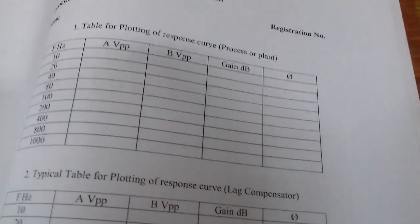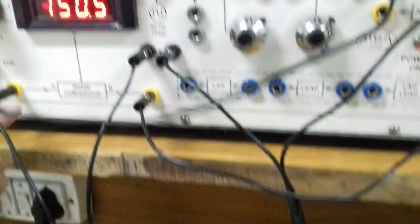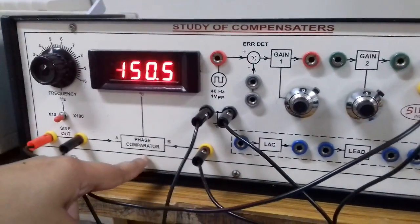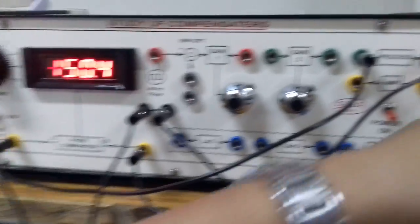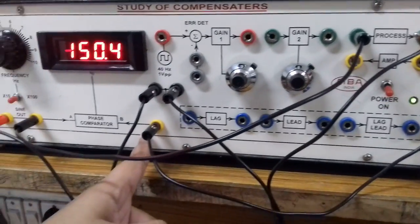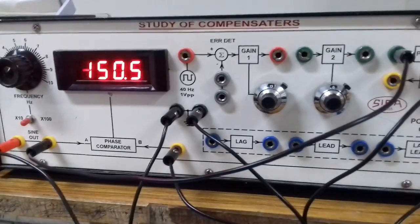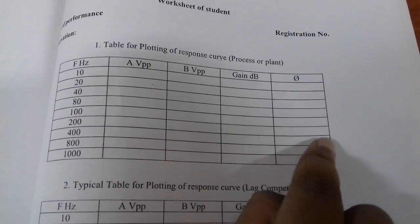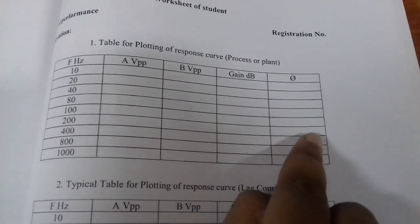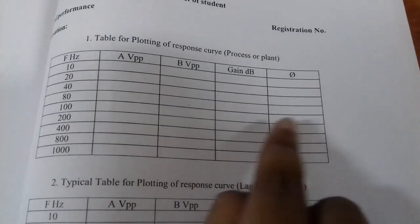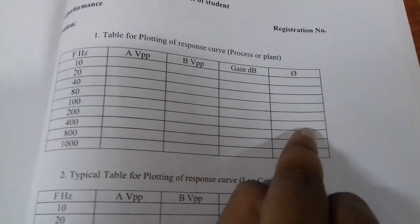The phase of the system is the second quantity which we have to observe. As we can see here, the input phase is going inside the phase comparator. Output of the phase is coming here to the phase comparator. The phase can be seen over here. In the end we have to find out the gain in dB and phase in degrees. The plot between gain and phase will be drawn. As we know, this kind of a plot is called a Bode plot.